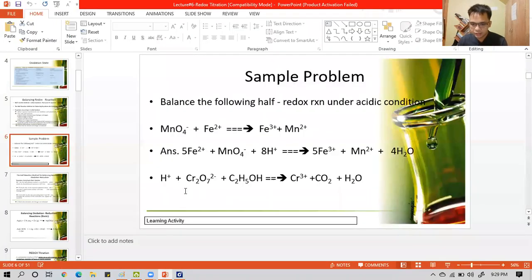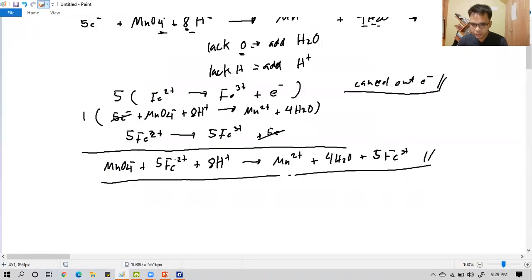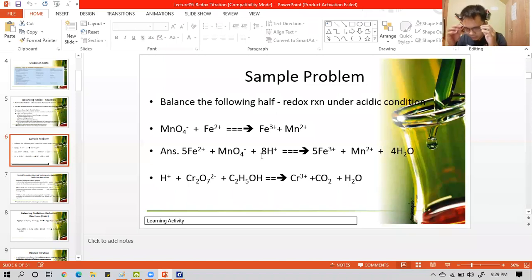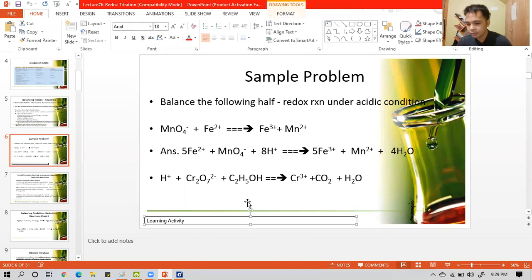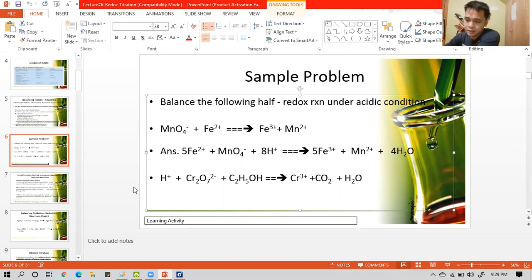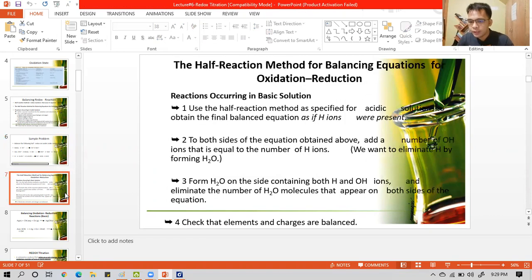So did we get it right? 5 Fe2+, MnO4-, 8H, and 5Fe3+. So we got it. The second part, the reaction of hydrogen ion dichromate and ethanol forming chromium ion carbon dioxide and water, that will be your assignment. That will be part of your learning activity. I covered the answers.